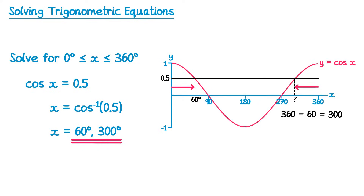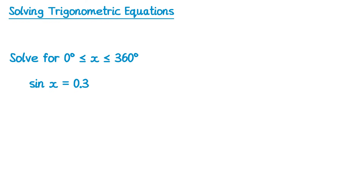Remember, this one you'd need to be able to do completely without a calculator. Now let's look at some equations with sine. You'd start in the same way — inverse sine of 0.3, which gives you 17.5 to one decimal place.